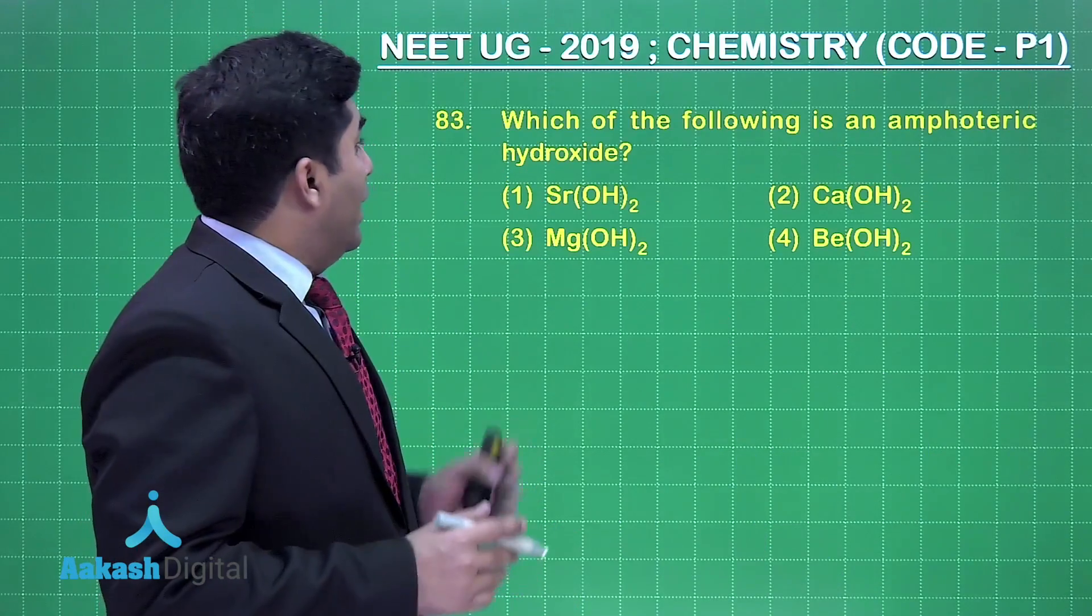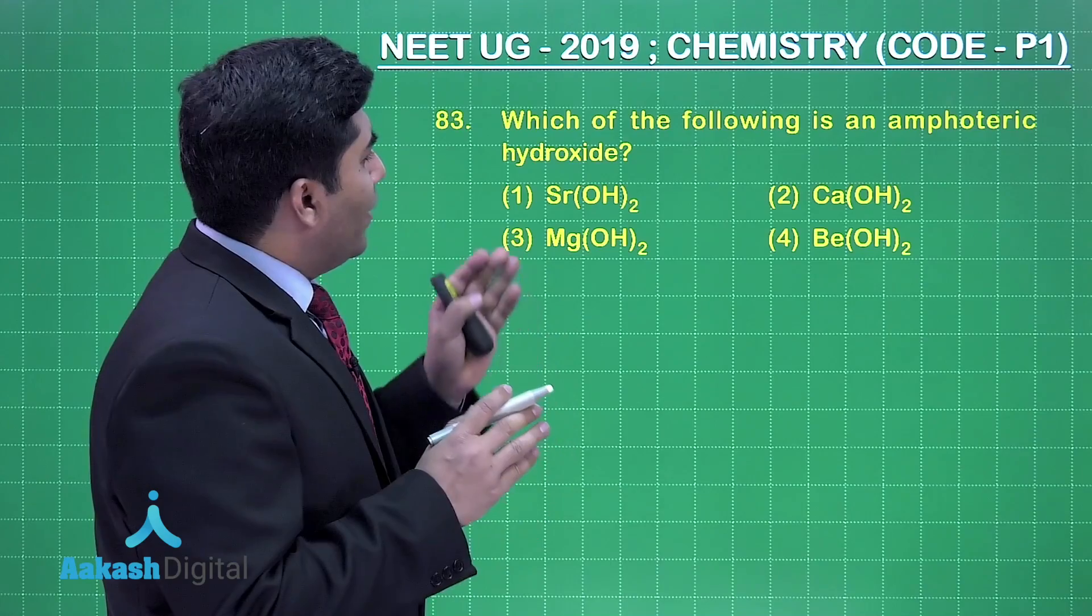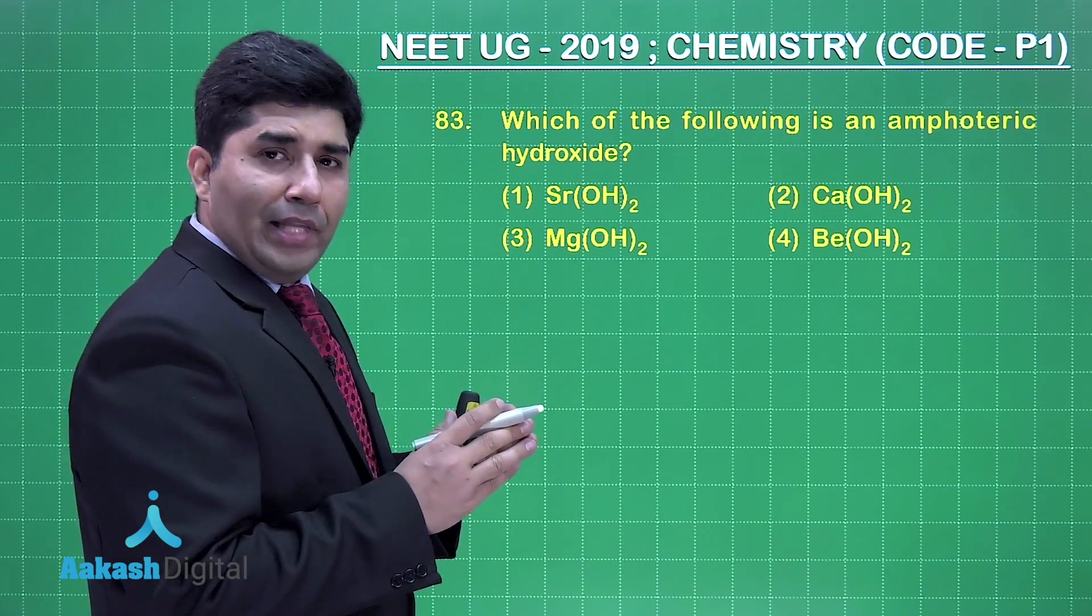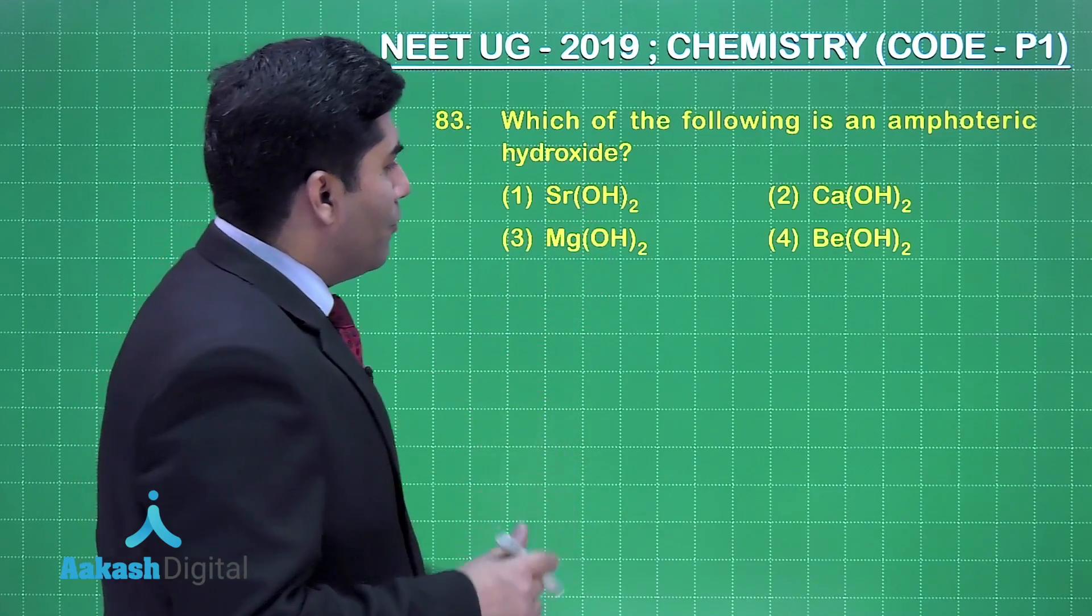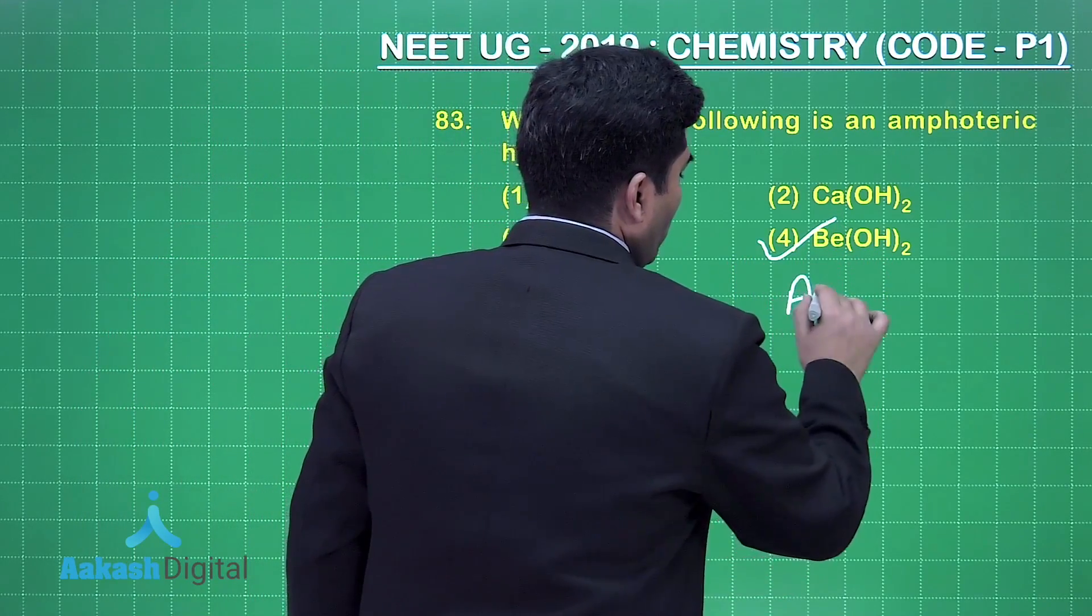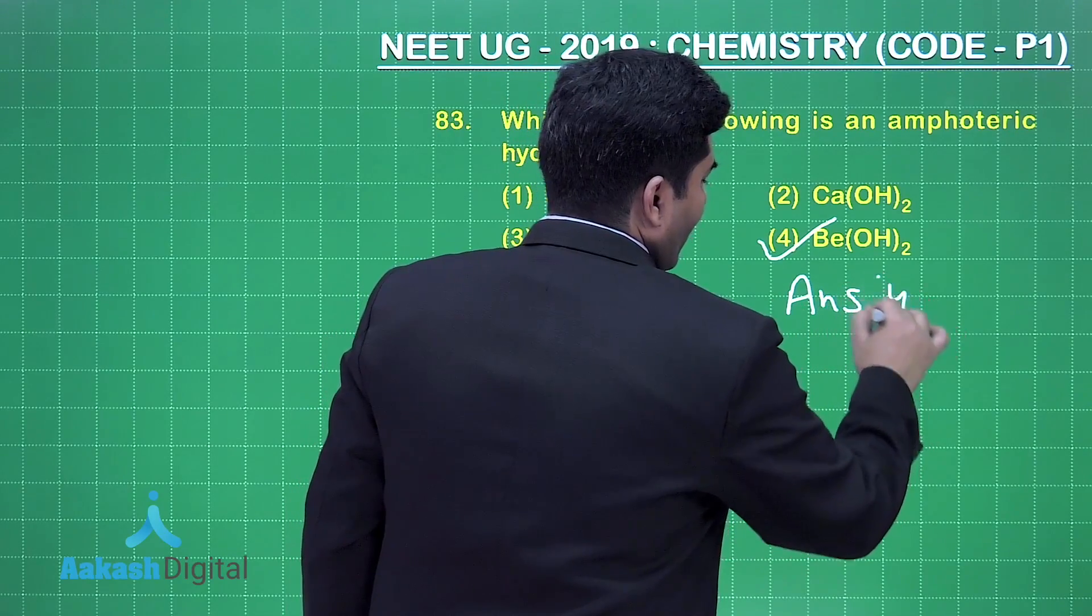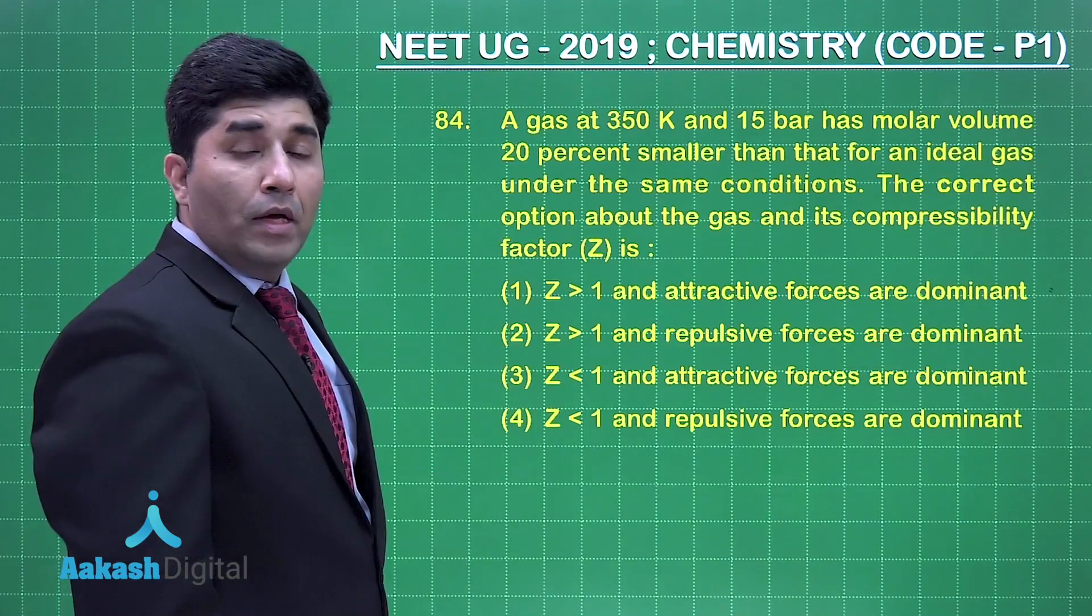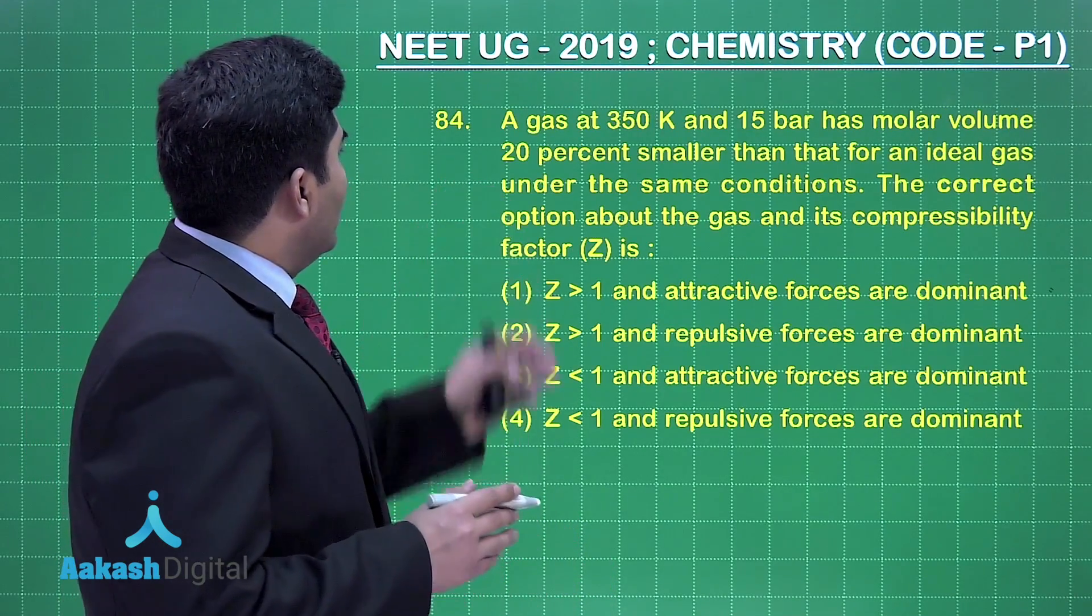Let's move on to the next question. This question is asking which of the following is an amphoteric hydroxide. In NCERT it's clearly given that beryllium hydroxide is amphoteric, so our answer is option number 4.